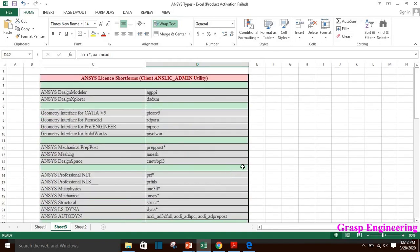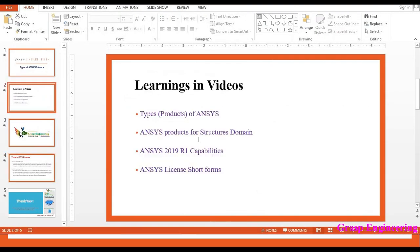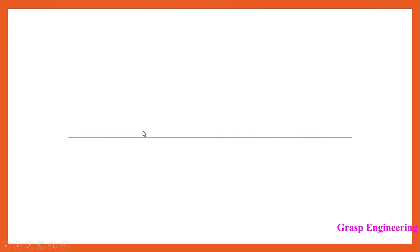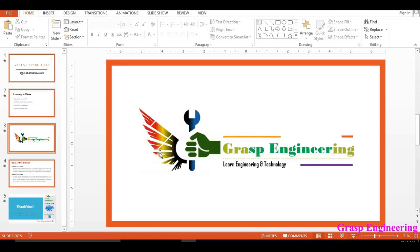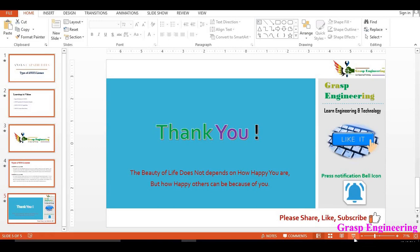That's it. We have covered most of the topics discussed in this presentation — what are the types and different products for the structure domain. You can visit the ANSYS portal to find different domains beyond structure, such as embedded and electronics. Based on the description and your understanding, you can select the respective license. You can also download the capability PDF from Google to easily figure out from pre-processing to post-processing which license is needed for thermal, nonlinear, and other analyses. Thank you for your time — let me know your comments.